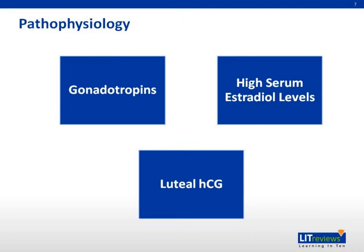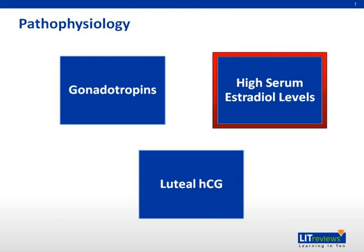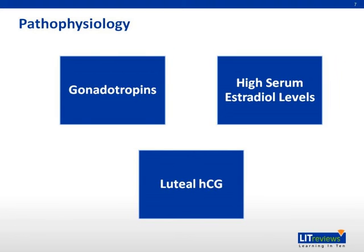The pathogenesis of ovarian hyperstimulation syndrome is unknown, but the process is related to increased vascular permeability in the regions surrounding the ovaries and their vasculature. Beta-human chorionic gonadotropin (HCG) and its analogs, estrogen, estradiol, prolactin, histamine, and prostaglandins have all been implicated. Vasoactive substances such as interleukins, tumor necrosis factor (TNF) alpha, endothelin-1, and vascular endothelial growth factor (VEGF) secreted by the ovaries have been implicated in increasing vascular permeability.